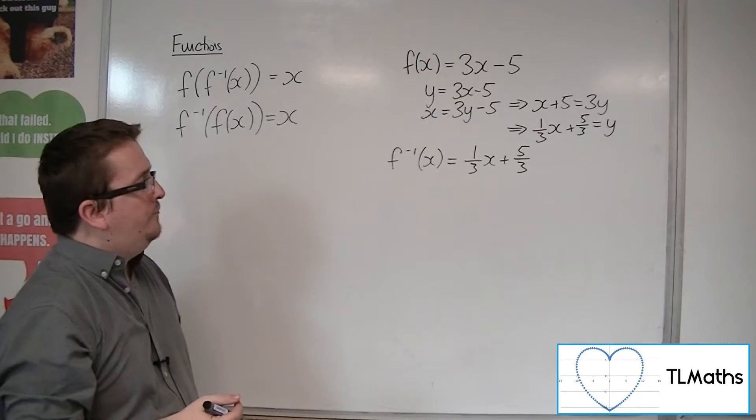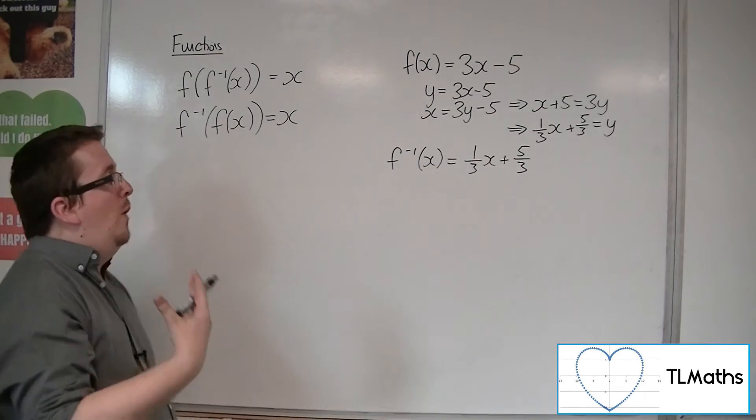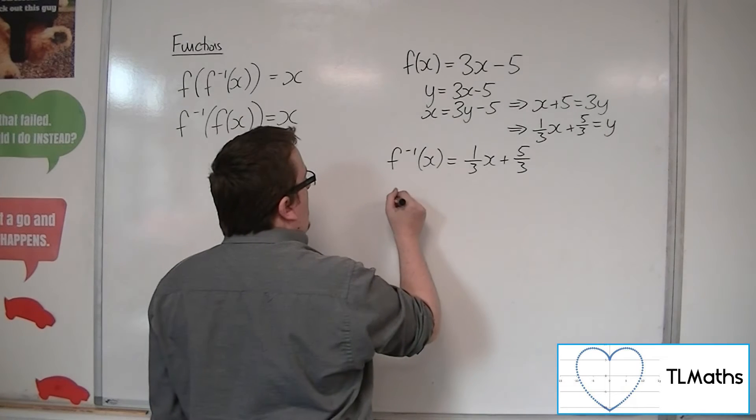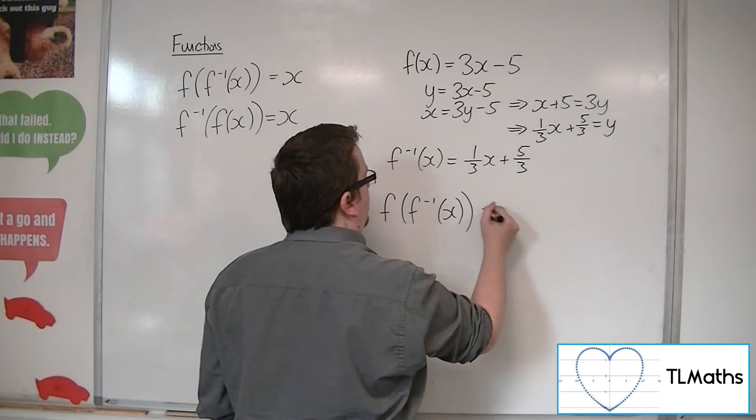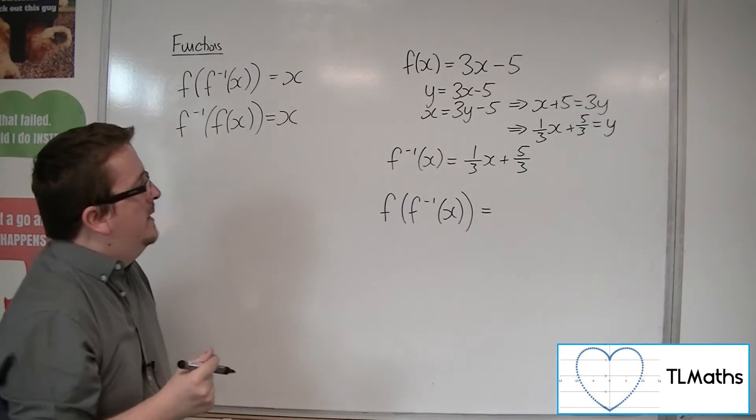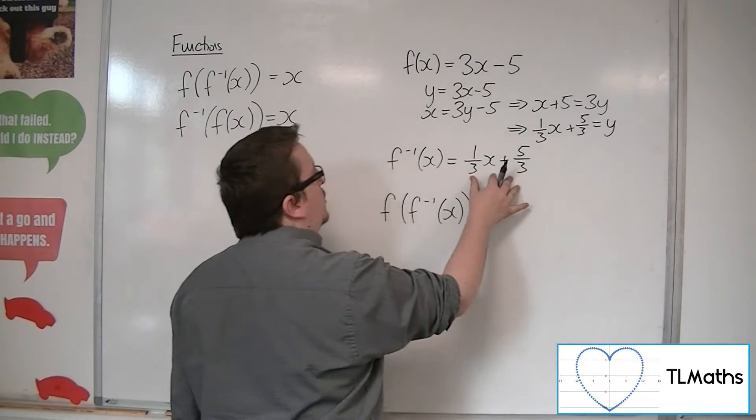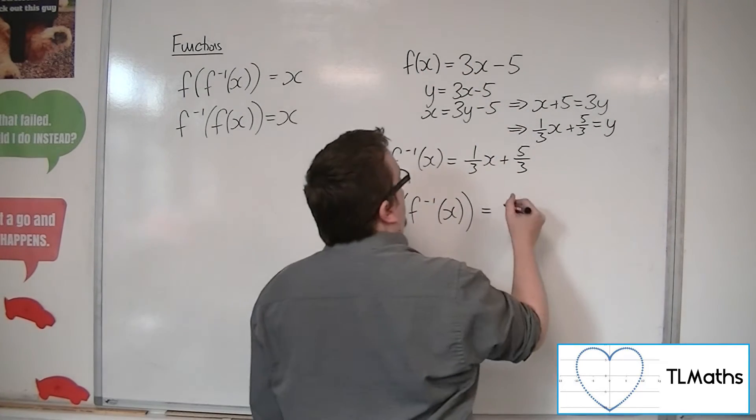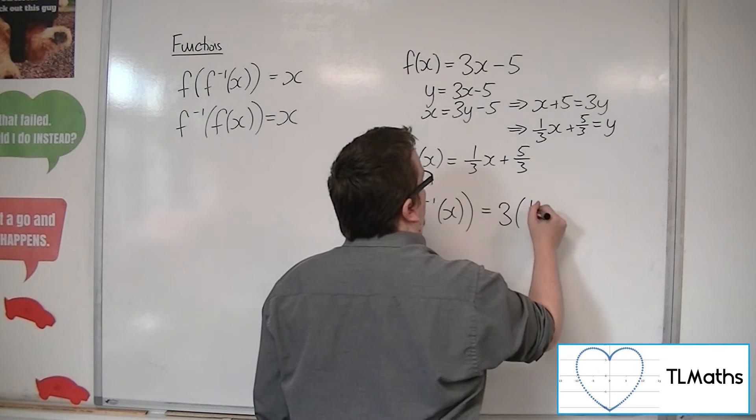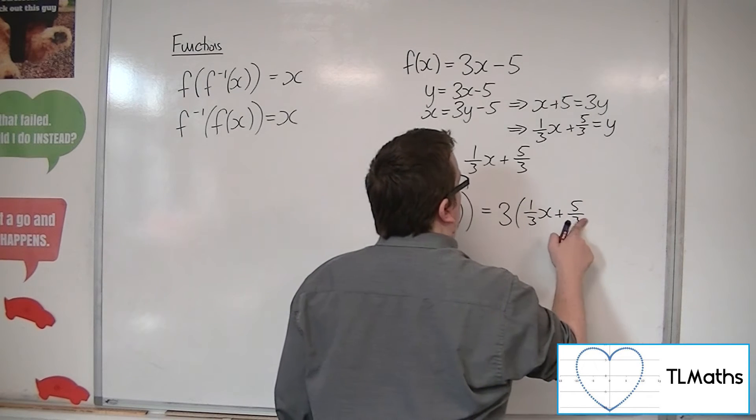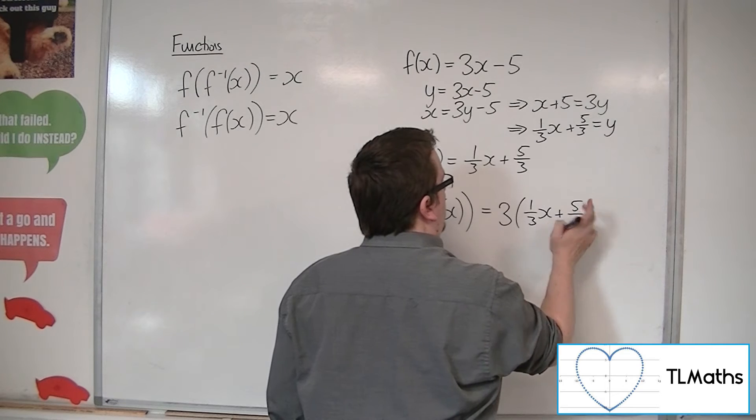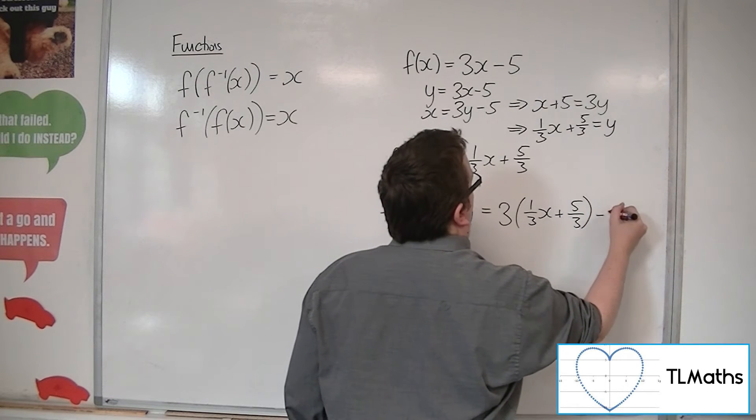So when I find f of f minus 1 of x, the composite function, then I am putting this function into this one. So I will have 3 lots of a third x plus 5 thirds. Take away 5.